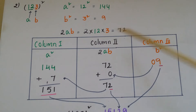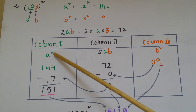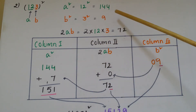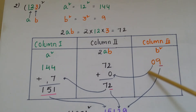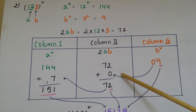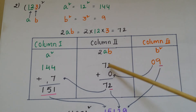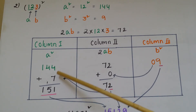Write Column 1, Column 2, Column 3 with a², 2ab, b² as before. Write 144 at Column 1, 72 at Column 2, and 9 at Column 3. Since 9 is a single digit, underline it and carry over 0 to Column 2. Then 72 + 0 = 72 — underline the units digit 2 and carry over 7 to Column 1. Add 7 to 144 to get 151.